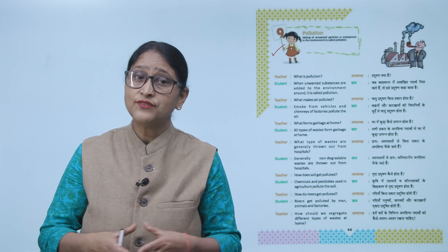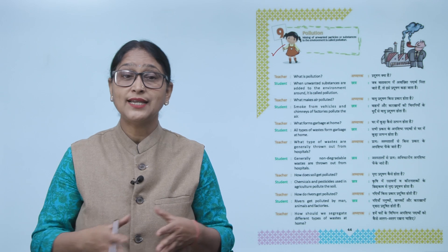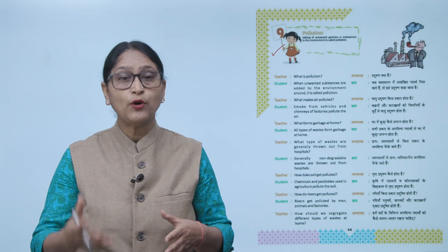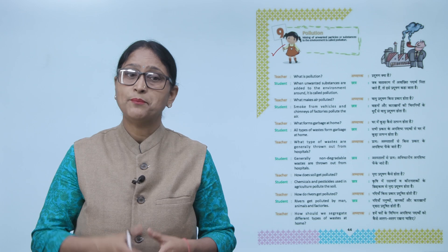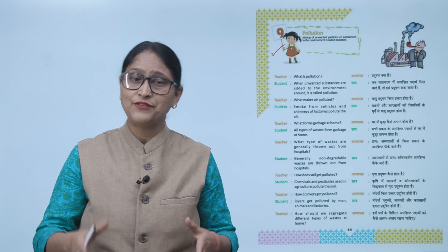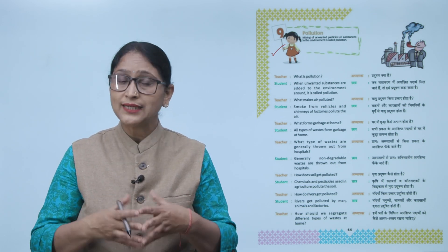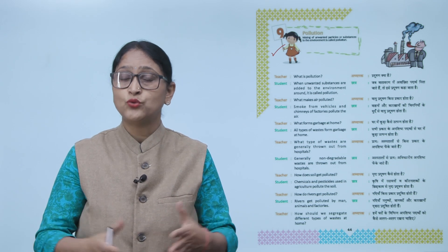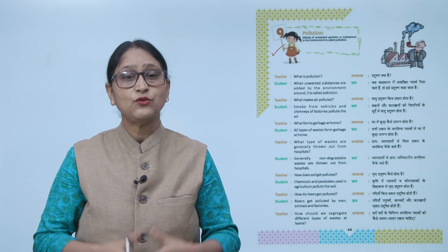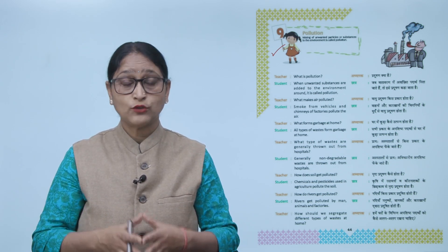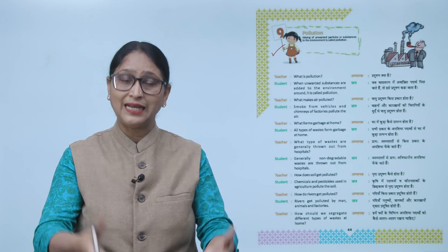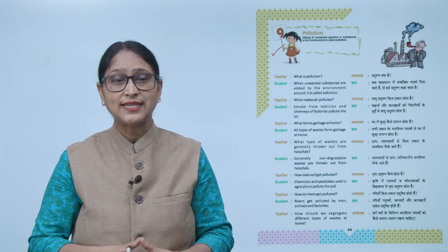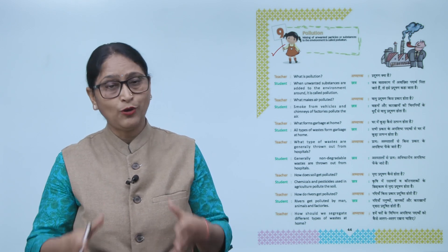Teacher: How do rivers get polluted? जो नदियाँ हैं, वो pollute कैसे होती हैं? Student: Rivers get polluted by man, animals and factories. हम लोग अपने घर का कूड़ा-कचरा नदियों में फेंक देते हैं। जो animals और factories भी नदी में waste डाल देते हैं — उनकी वजह से नदियाँ polluted हो जाती हैं।